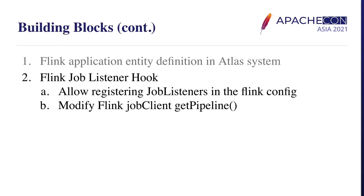In this slide we will dive into Flink application entity definition. In Atlas, an entity is a specific value or instance of a class type and represents a specific metadata object in the real world. For every data and process logic we want Atlas to track, we need to define them as an entity. There is a rich set of predefined entities such as DFS files, HBase tables, Hive tables, Kafka topics, and others, which Atlas already supports for lineage tracking. We simply want to create a Flink application entity definition in Atlas to complete the last piece of the puzzle for Flink and Atlas integration.